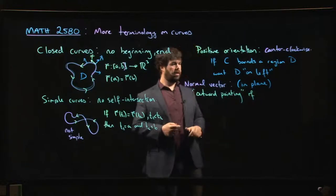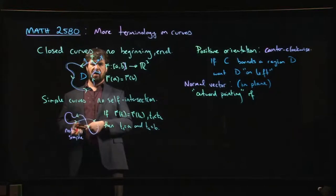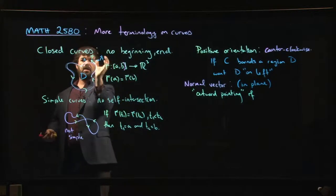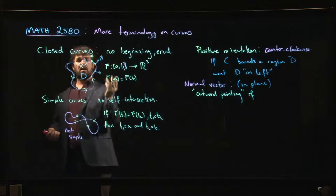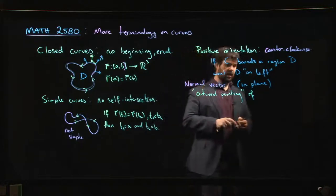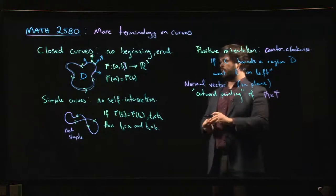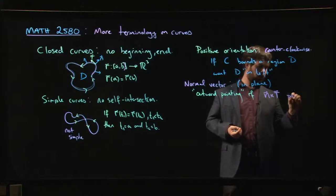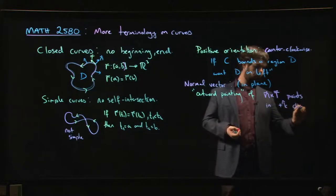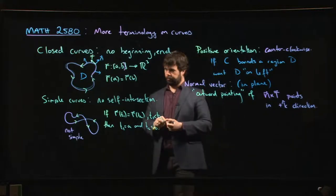To guarantee that the normal vector is outward pointing, even though these are vectors in the plane you can still make sense of the cross product using right-hand rules. You can work out using the right-hand rule for cross products that you want n cross t — the normal vector crossed with the unit tangent vector — to point in the positive z direction, the plus k direction.